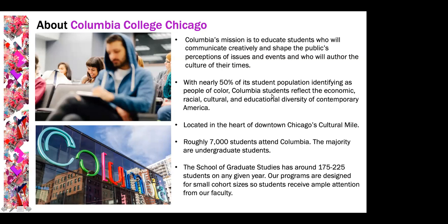For those of you who might not know much about Columbia: Columbia College Chicago is an arts and media school located in Chicago, Illinois. Columbia's mission is to educate students who will communicate creatively and shape the public's perceptions of issues and events, and who will author the culture of their times. About 50% of all of our student population identify as a person of color, so Columbia students really do reflect the economic, racial, cultural, and educational diversity of contemporary America.